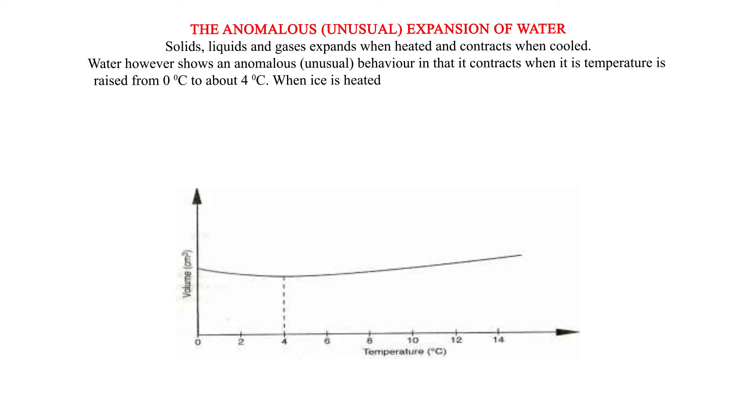When ice is heated from, say, negative 20 degrees Celsius, it expands until its temperature reaches 0 degrees Celsius and it melts with no change in temperature. The melting is accompanied by contraction.